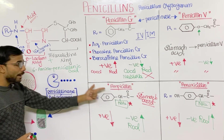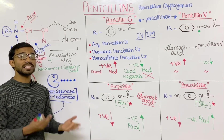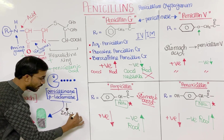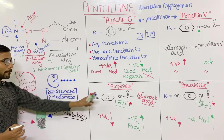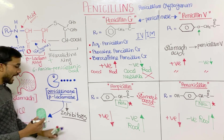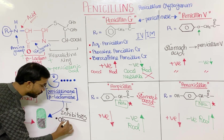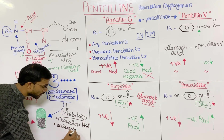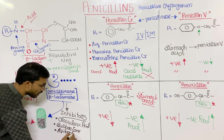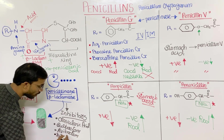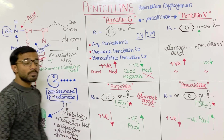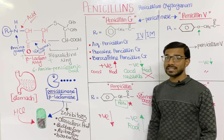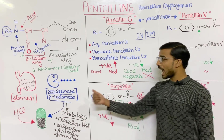That bacterial enzyme can destroy ampicillin and amoxicillin. To prevent this, we add penicillinase or beta-lactamase inhibitors along with ampicillin and amoxicillin. The four most important beta-lactamase inhibitors are: clavulanic acid, sulbactam, avibactam, and tazobactam. These four compounds can easily inhibit this enzyme.